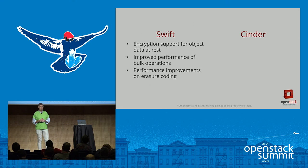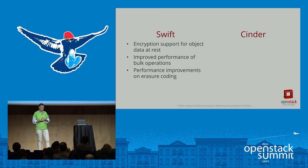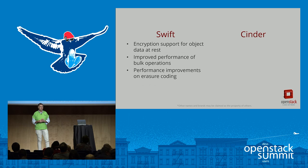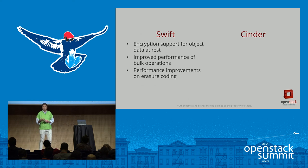In Swift, keeping with the security theme, there's now encryption at the object level while on disk — if someone were to hack onto the system, they wouldn't be able to decode what's in the objects. There are also performance improvements, including on erasure coding, which is essentially RAID in software — the ability to stripe objects across copies for resiliency without having to fully replicate an object two or three times. However, erasure coding is expensive from a CPU perspective, so this work cleans that up to have it perform better.